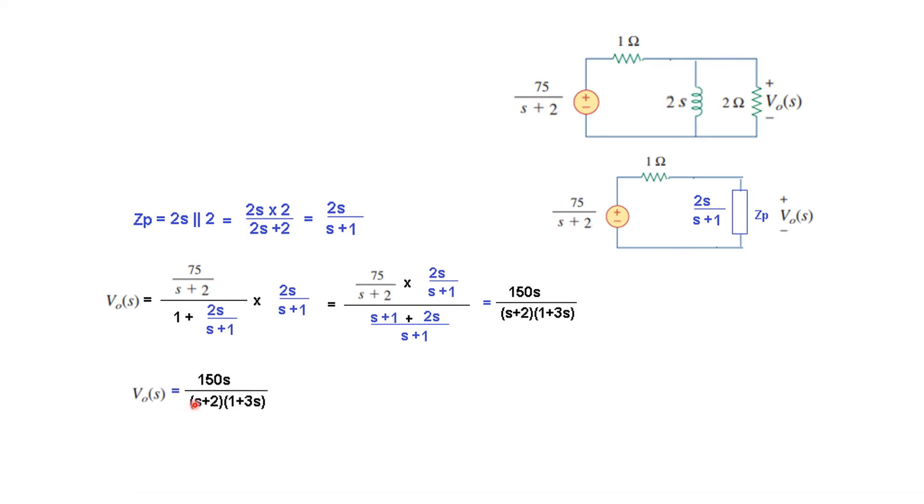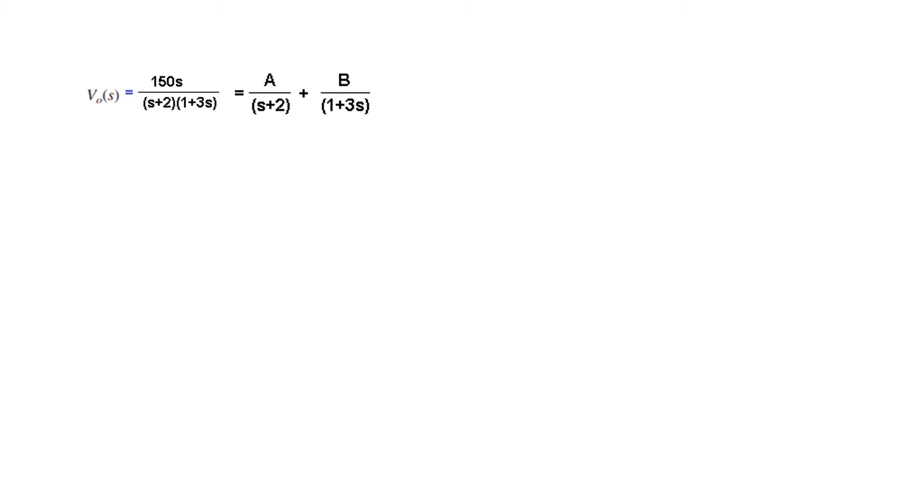So this is VOS, now you need to use the partial fraction technique that we have learned. So we will add it A divided by S plus 2 plus B divided by 1 plus 3S. So the value of A divided by reduction method will be S plus 2 multiplied by VOS, condition is S is equal to minus 2 from here. If you put this equal to 0,